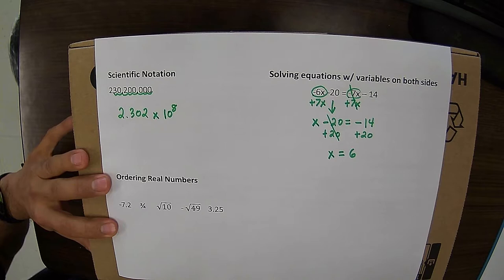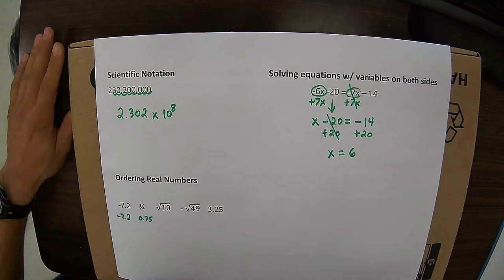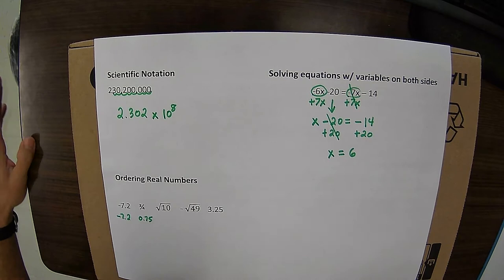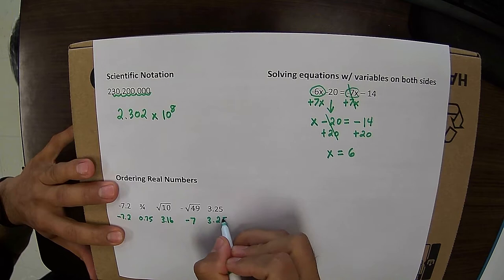Order in real numbers. I have five real numbers that I want to put in order from least to greatest. So first thing I'm going to do is I'm going to convert them to decimals. So negative 7.2 would just stay negative 7.2. 3 fourths, that's going to change to 0.75. Square root of 10, I'm going to calculate that in my calculator. That's going to give me 3.16. Negative square root of 49 is going to give me negative 7. And 3.25 is just 3.25.